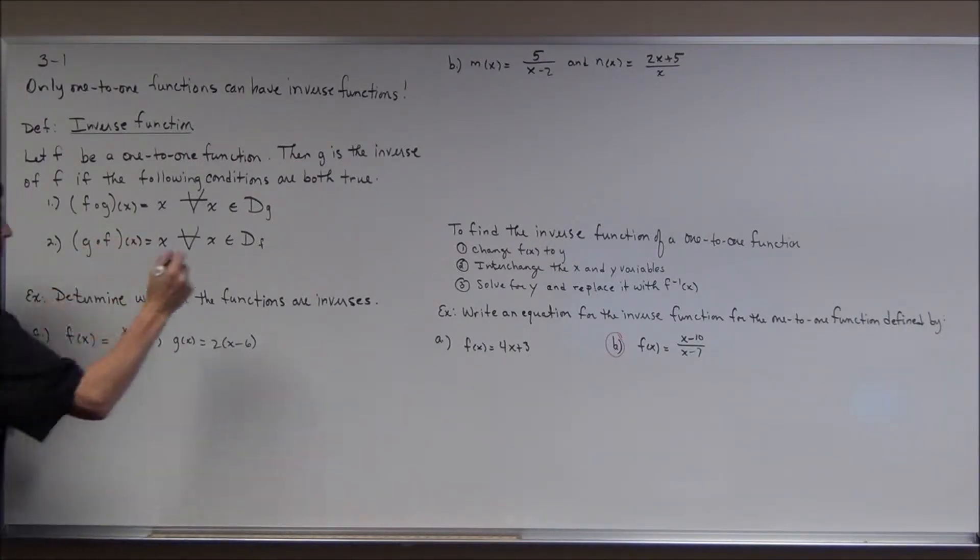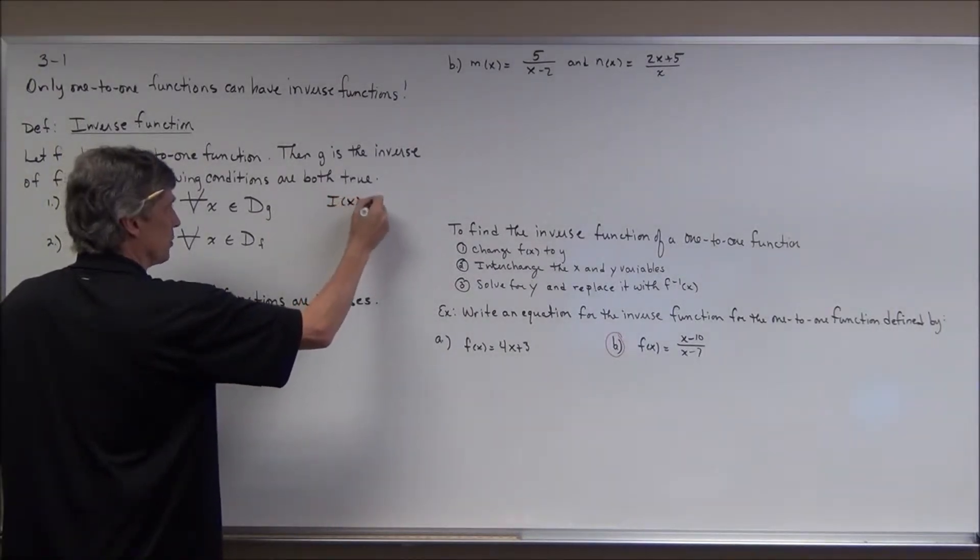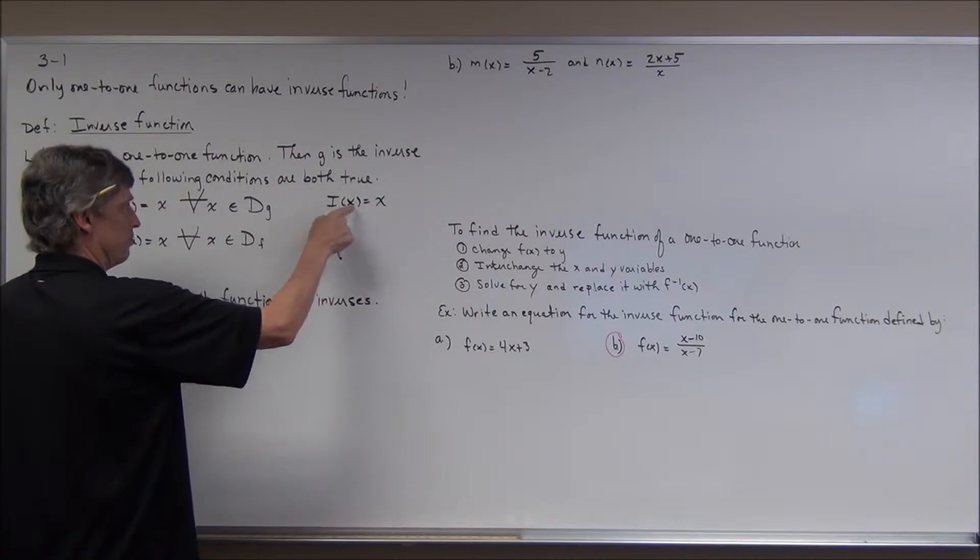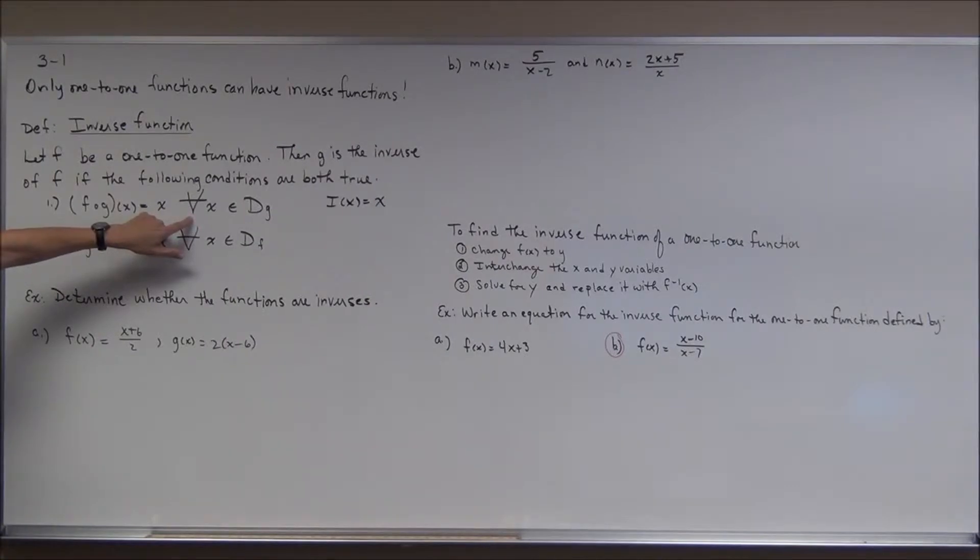The identity function, sometimes it's written as i of x is equal to x. You can see why it's the identity. You plug 5 in, you get 5. You plug 10 in, you get 10. So we get back to x. And this symbol, by the way, means for all or for every. Looks kind of like an upside down capital A with the slash went a little crazy.